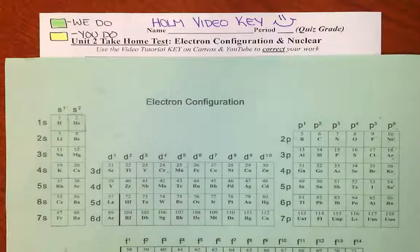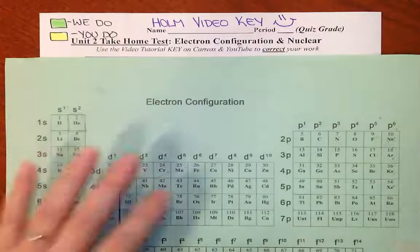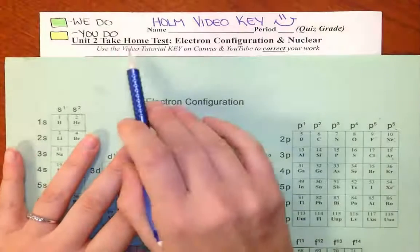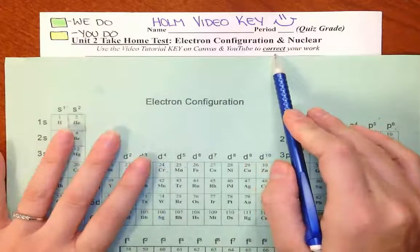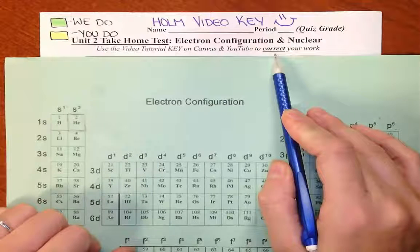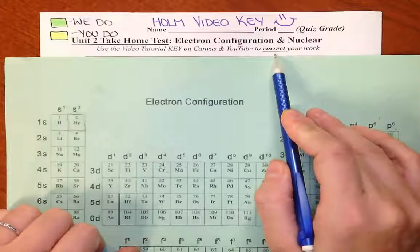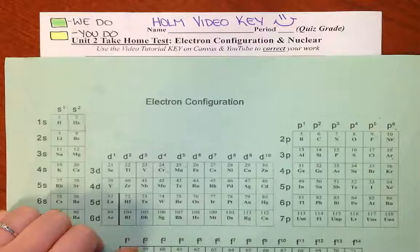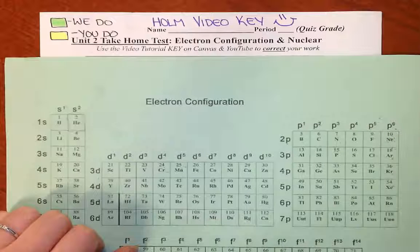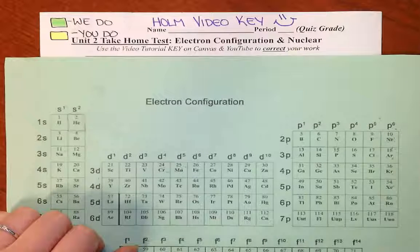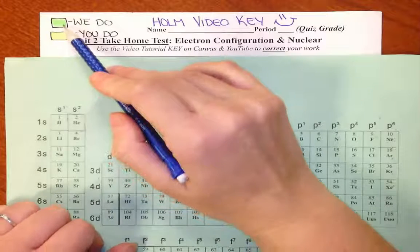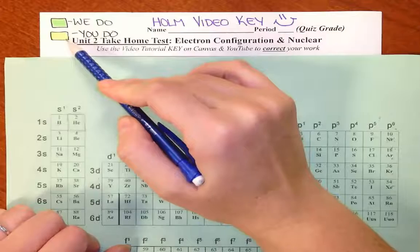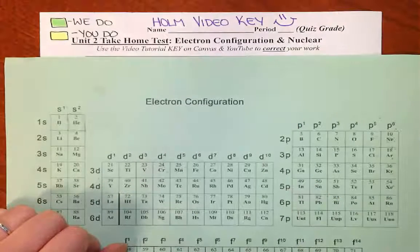This is the video key for the Unit 2 Take Home Test. Please make sure as you're using this video key, you're using it helpfully. You use it to correct your work. You will learn more from fixing a mistake that you made than from getting the answer from this video. There are 10 points of extra credit hidden in this video. Anything you see highlighted in green is something we're going to do together. Anything highlighted in yellow, I'm going to leave for you to try on your own.